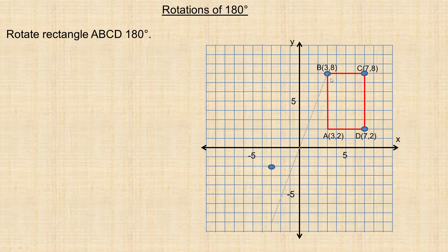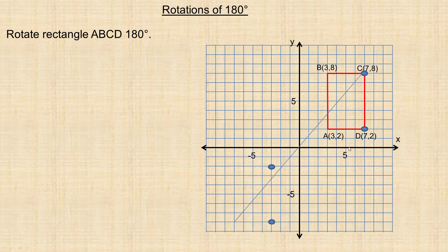Let's do point B next. Point B is 3 units to the right and 8 up, so B's image will be 3 units to the left and 8 down — exactly on the other side of that circle. Similarly, point C has coordinates 7, 8 — so 7 to the right and 8 up — meaning its image is at 7 to the left and 8 down. Point D is 7 units to the right and 2 up, so it rotates to 7 to the left and 2 down.